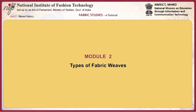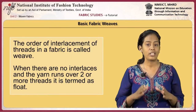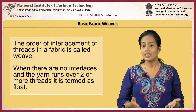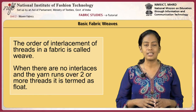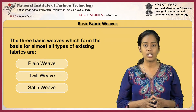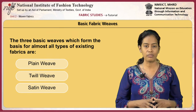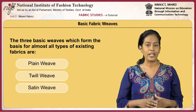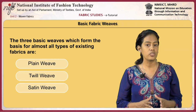This module focuses on the three basic types of fabric weaves: plain weave, twill weave and satin weave. It also explains how woven fabrics are classified based on their weight. The order of interlacement of threads in a fabric is called the weave. When there are no interlaces and the yarn runs over two or more threads, it is termed a float. There are three basic weaves which form the basis for almost all types of existing fabrics: plain weave, twill weave and satin weave. All other weaves are variations or combinations of these weaves.